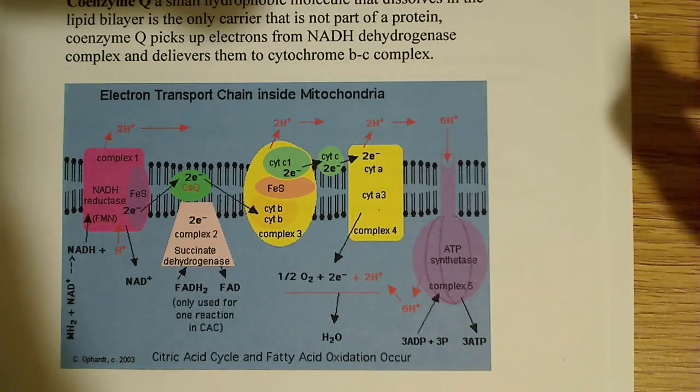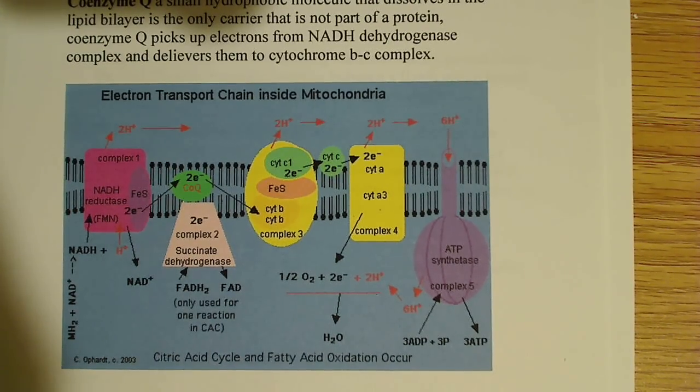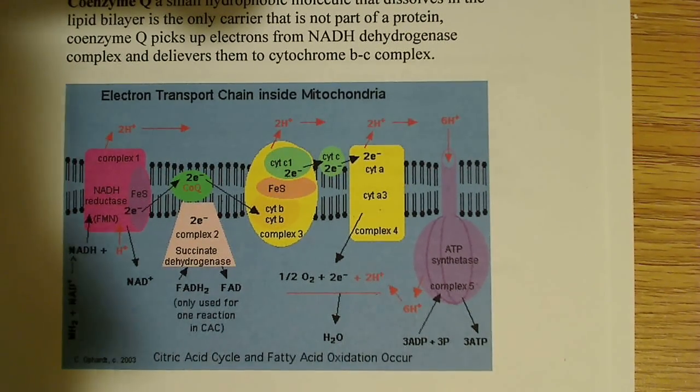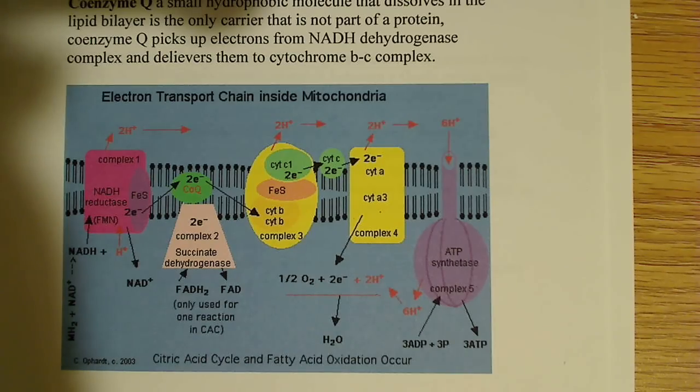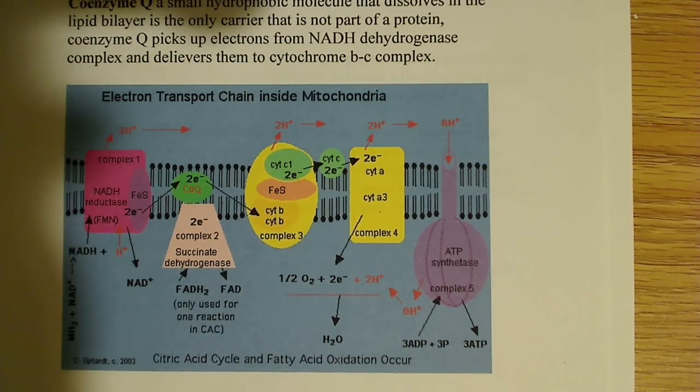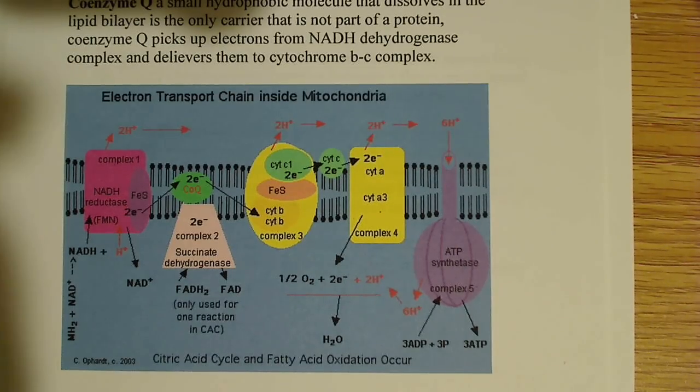When you use FADH2, you don't pump protons in this step, so you actually have a slightly smaller proton gradient. When you use NADH, it goes through complex 1, complex 3, and complex 4, and then eventually oxygen takes up the electrons and forms water. All three of those complexes—complex 1, 3, and 4—all pump protons. So they produce quite a bit of energy.